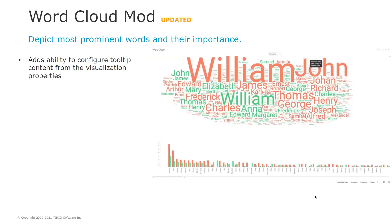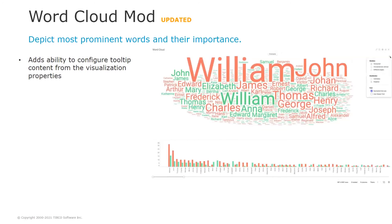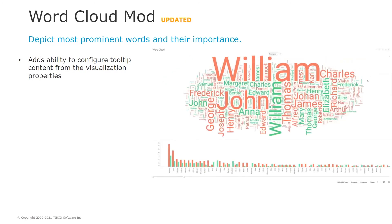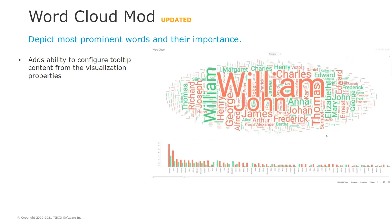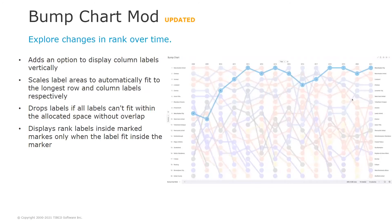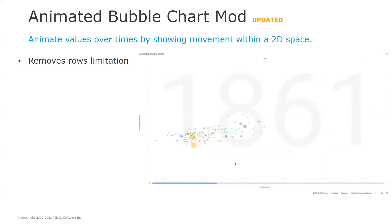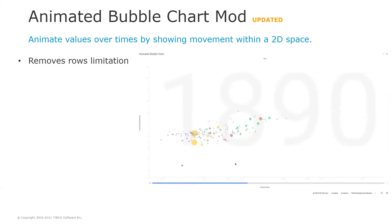Existing mods are also updated and improved. For instance, the word cloud mod was recently updated to add support for configuring tooltip content from the visualization properties. The bump chart mod was also updated to improve label rendering. The animated bubble chart mod was recently updated and now has no limitation on the number of rows.